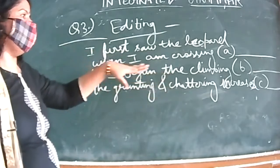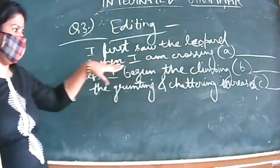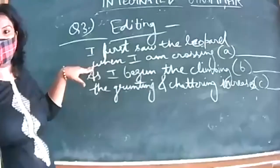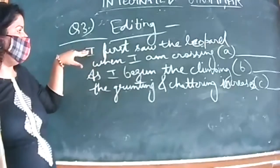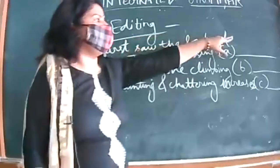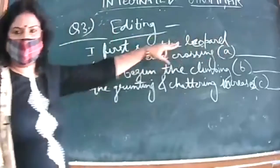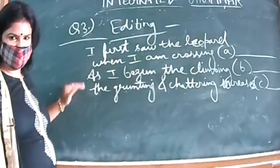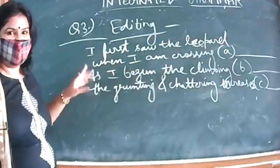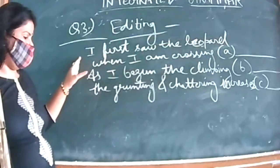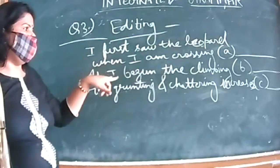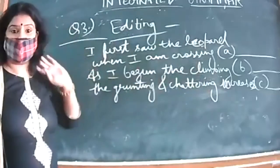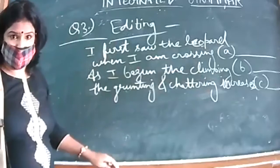Question number three: 'I first saw the leopard when I am crossing A dash.' A dash here means the error is in this line only. If no blank is given against a line, it means there is no error. So there is one error in each marked line. You have to identify the error, underline it, and write the correct answer in the space provided in the subjective paper.